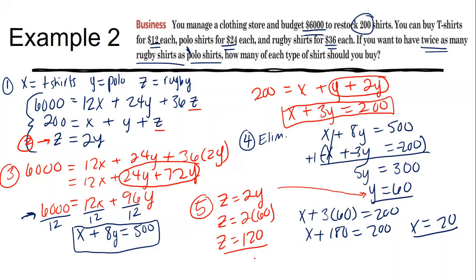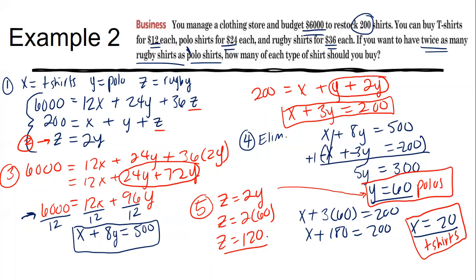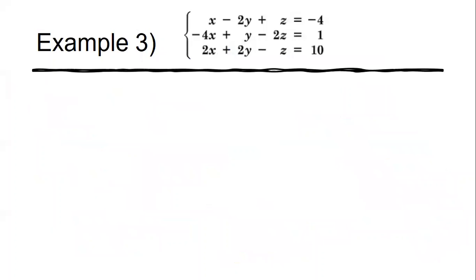Remember to interpret the variables in context. x = 20 t-shirts, y = 60 polo shirts, and z = 120 rugby shirts. You must state what each number represents, not just write the values. So we're ordering 20 t-shirts, 60 polo shirts, and 120 rugby shirts.